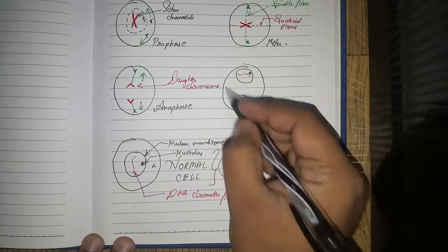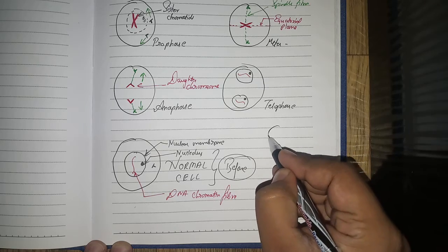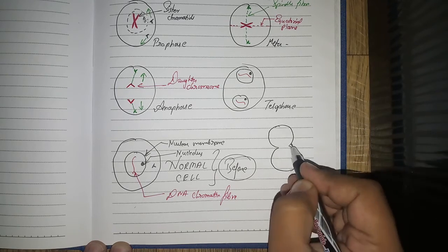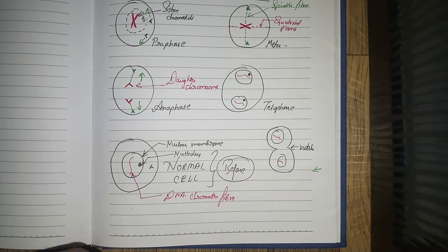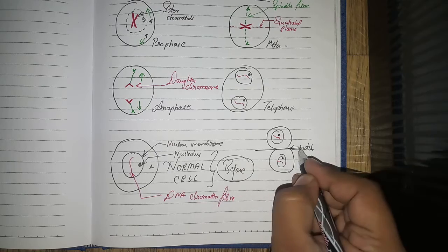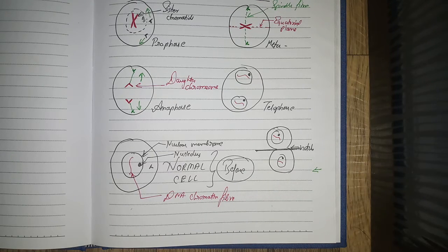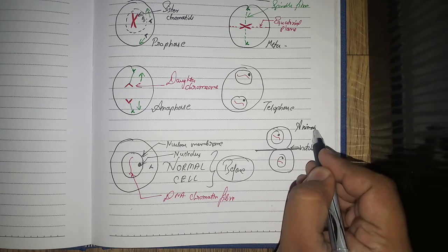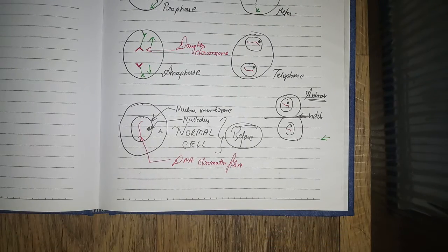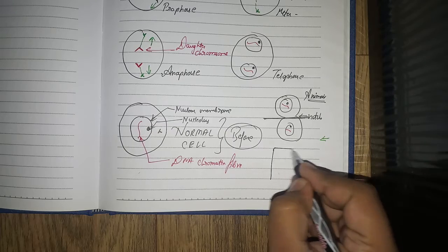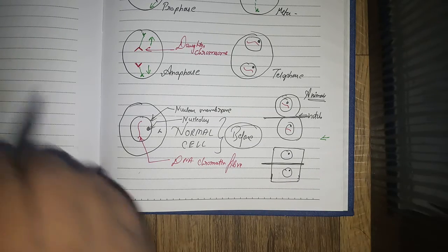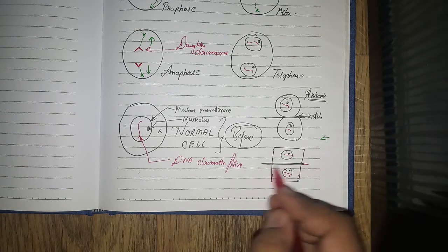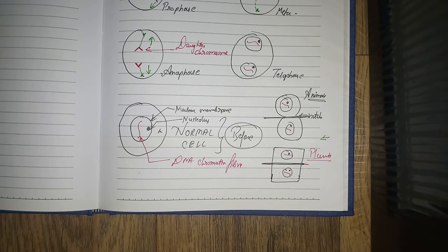After telophase is complete, cytokinesis takes place. In animals, a notch — a cleavage furrow — is created and the cell pinches into two separate daughter cells. In plants, a cell plate is formed in the middle, which slowly divides the cell into two daughter cells. This is mitosis.